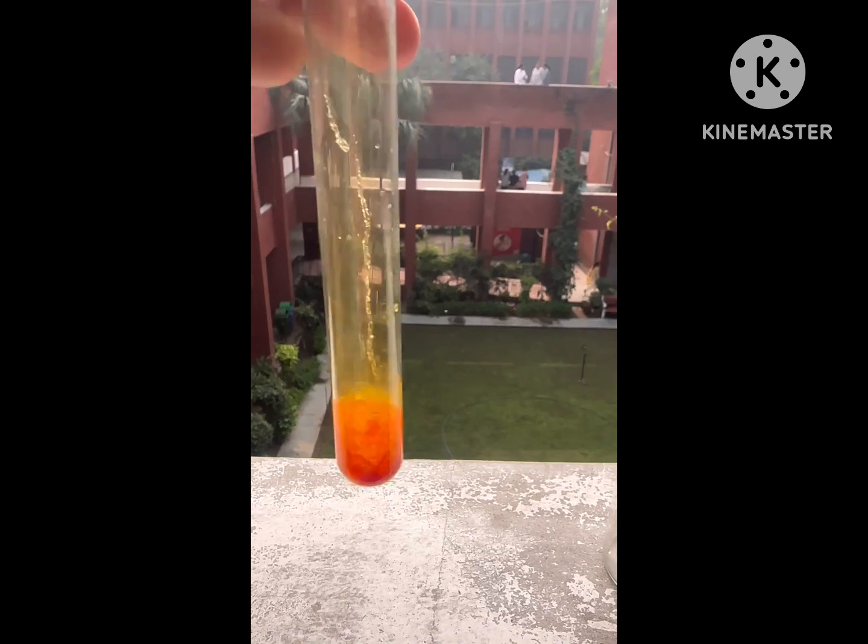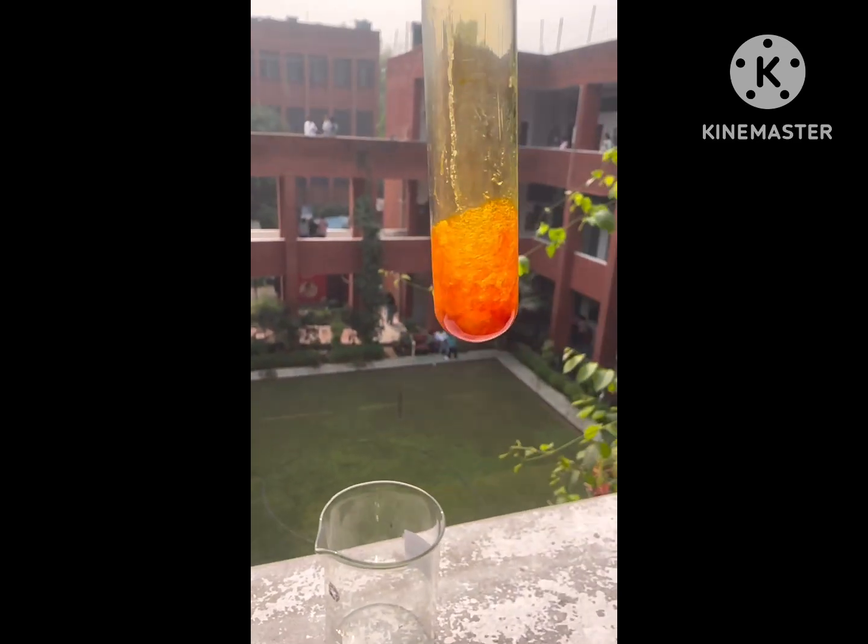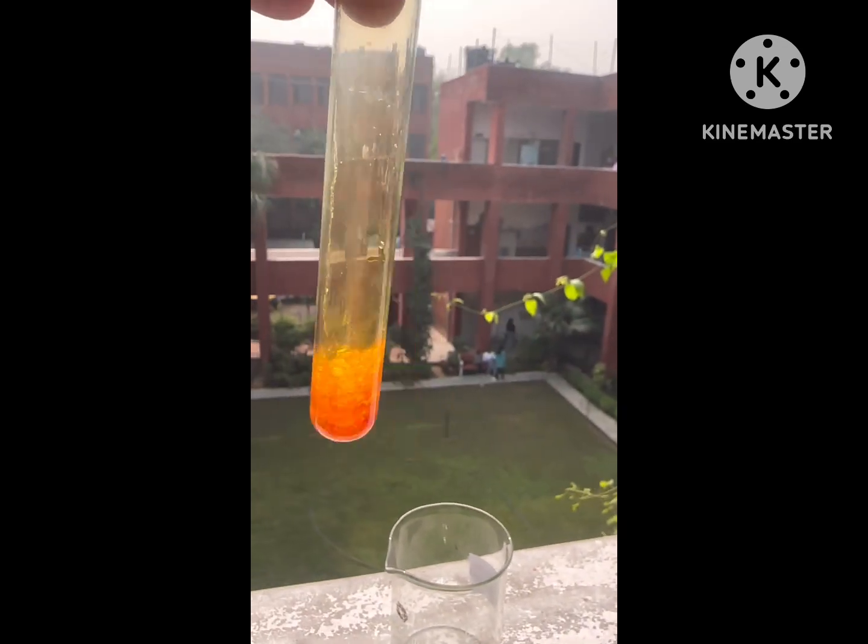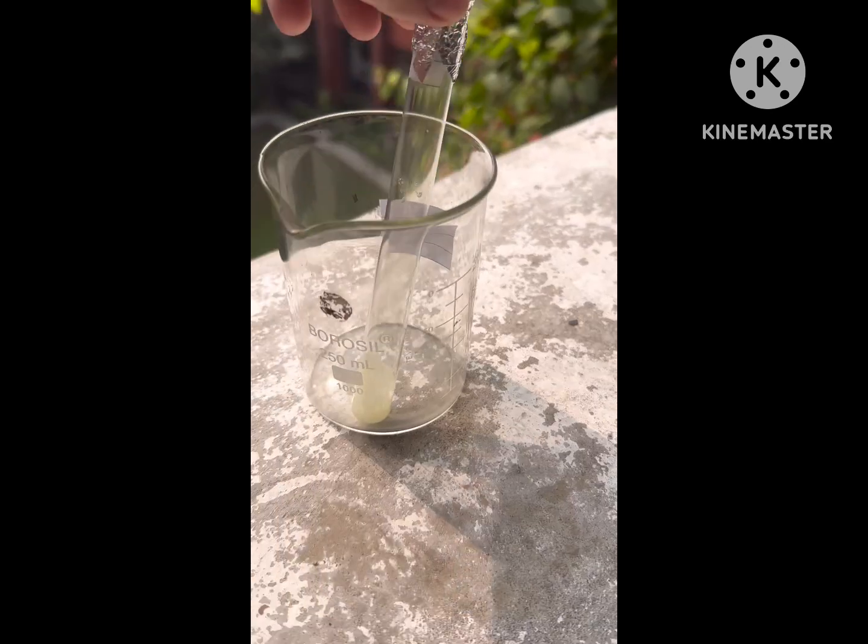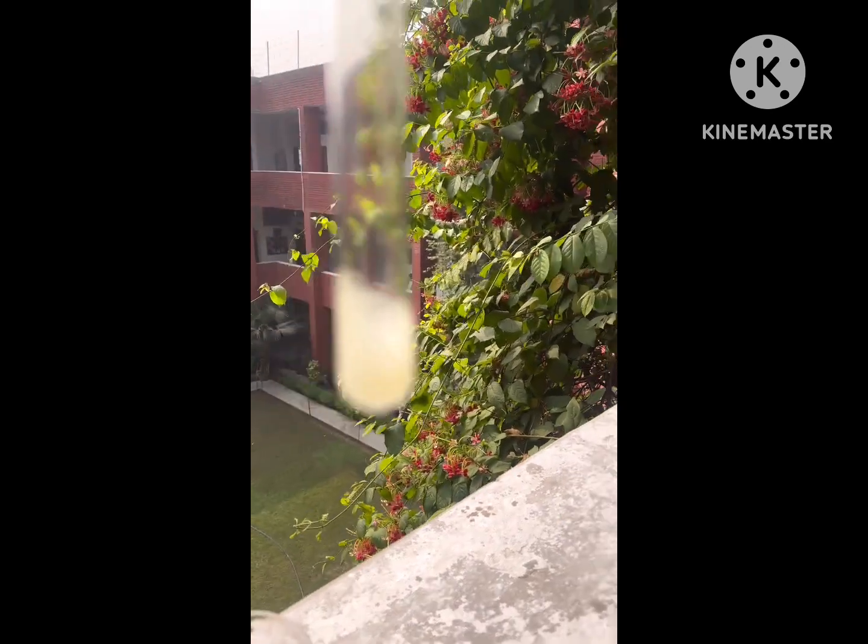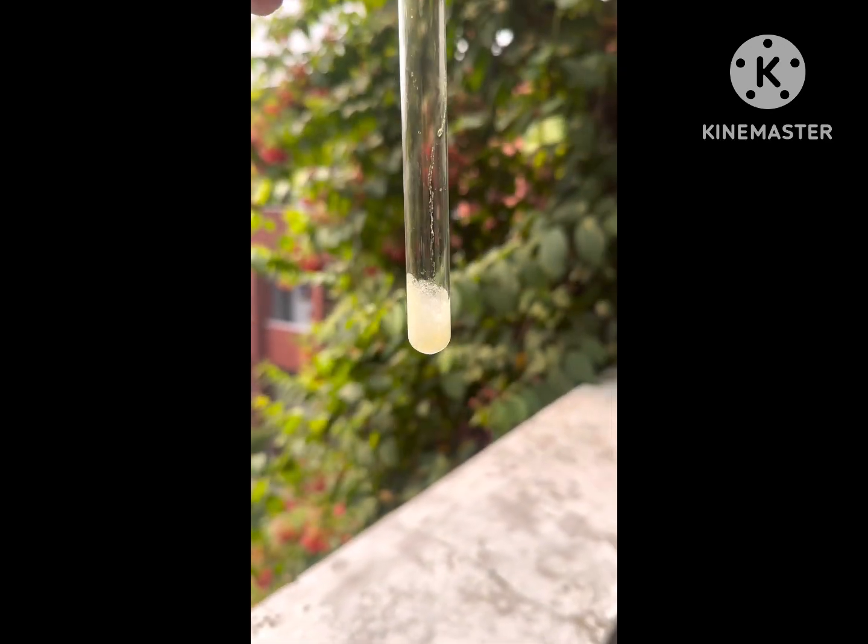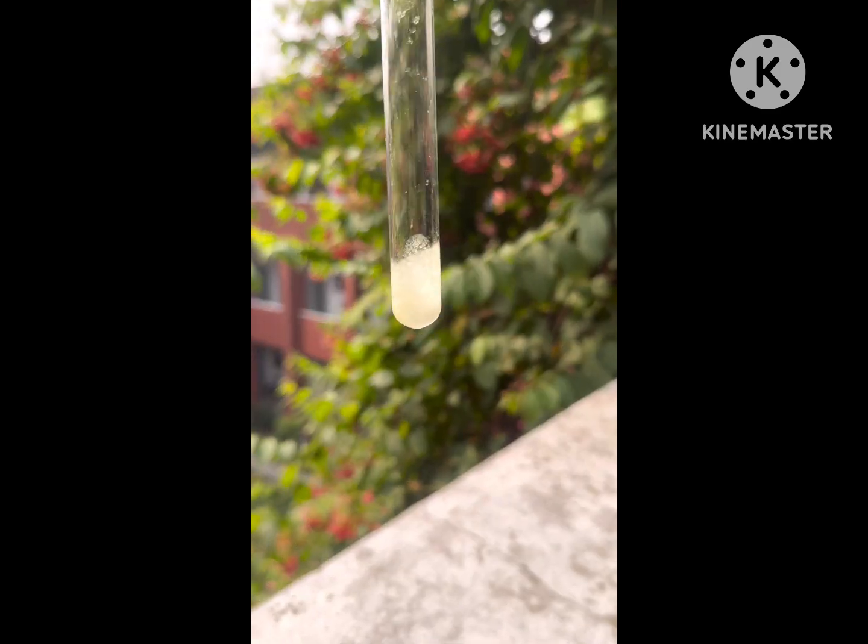Now we will keep this reaction mixture in sunlight for next 10 minutes so that the reaction gets completed and whole of the dimethyl maleate gets converted into dimethyl fumarate. So now we get the white solid.